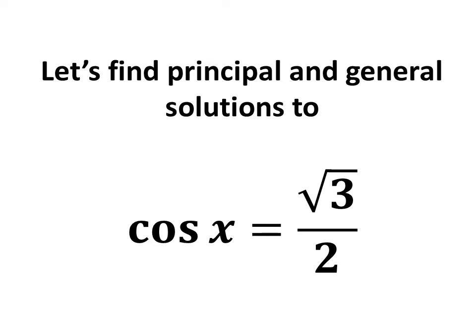In this video, we will learn to find the principal and general solutions to the equation cosine of x is equal to square root of 3 upon 2.